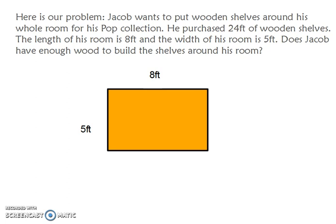Here we have a rectangle, and we are only given two sides. We know that a rectangle's opposite sides are congruent. Therefore, we can fill in the missing lengths based on the properties and attributes of a rectangle.